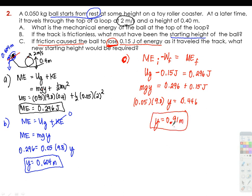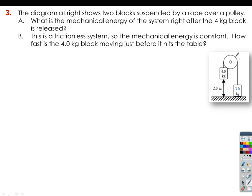That result is higher than the height when there is no friction. Next, number three — this looks like an Atwood machine. There are several ways to solve Atwood machine problems: you can use Newton's laws as discussed before, or you can use conservation of energy. The diagram shows blocks suspended by a rope over a pulley. For letter a, what is the mechanical energy of the system right after the four kilogram block is released?